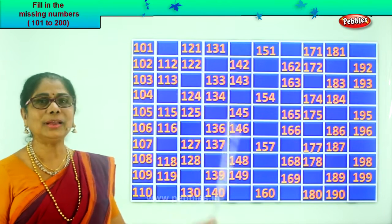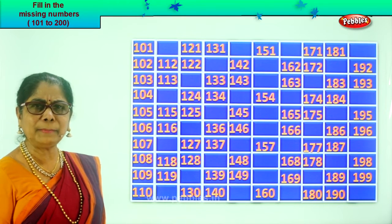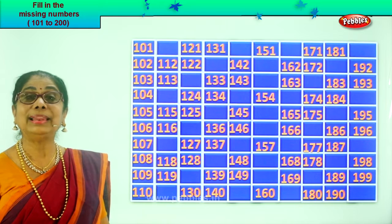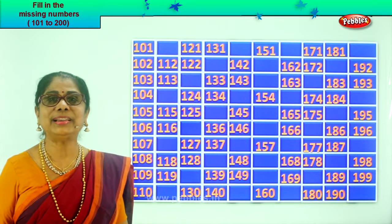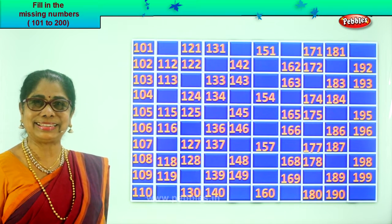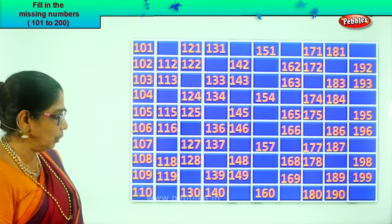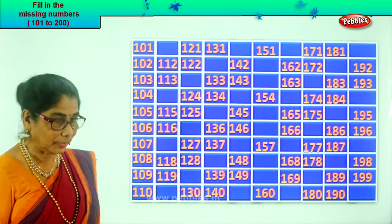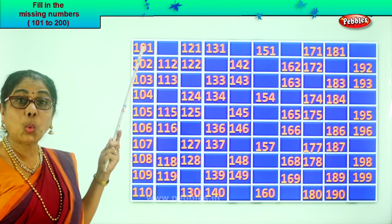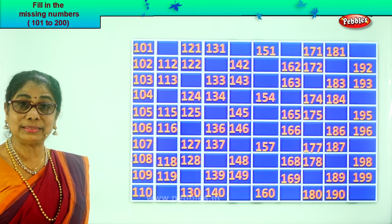Look at this board now. A whole lot of numbers are there but there are some numbers not there at all. Let's find, we'll count aloud, find for ourselves. Yes, it's a very good exercise. Now what do we have here? They are all three digit numbers.